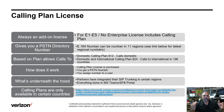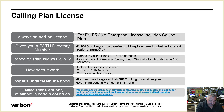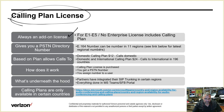The Calling Plan license is always an add-on license. You'll add it on to any E1 through E5 subscription. It gives you a PSTN number — that's what gives you a PSTN number. You can get numbers in 11 regions today. When you buy 100 Calling Plan licenses, you get 100 numbers that you can assign to your Teams users.